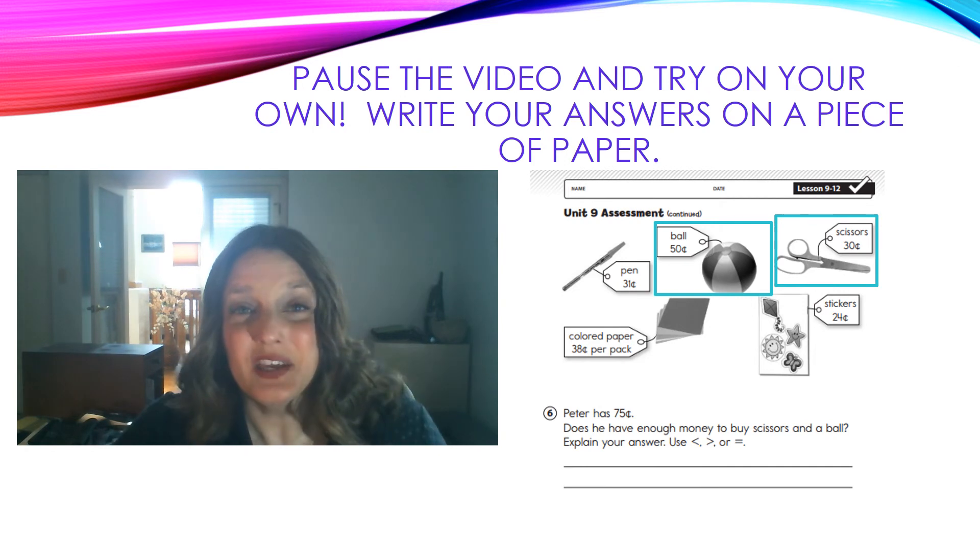Yay! You've made it to the last question for today. Number 6. We're going to use those pictures and prices again. But we're only going to look at the pictures that have the aqua colored boxes around them. So, Peter has 75 cents. Does he have enough money to buy the scissors and a ball? Explain your answer and use the symbols. Remember, pause the video to try this on your own. Write your answers on your paper. And then we'll check to see how you did.